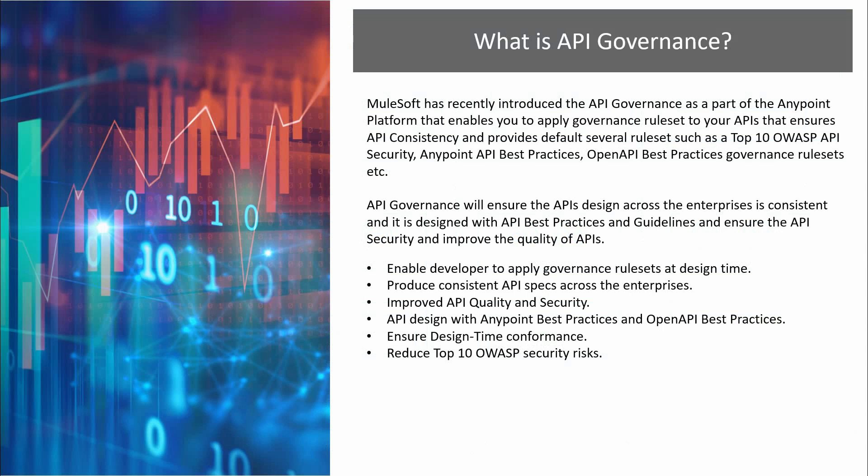The main purpose of API governance is to ensure API consistency and compliance during design time. While you are writing your RAML, OpenAPI specification, or AsyncAPI specification, you can apply rulesets in Design Center and see whether your API is following Anypoint best practices, OpenAPI best practices, and the OWASP top 10 security guidelines. When you publish your API to Anypoint Exchange, if you have created an API governance profile that matches your API, it will automatically generate a report indicating whether your API is compliant or non-compliant.